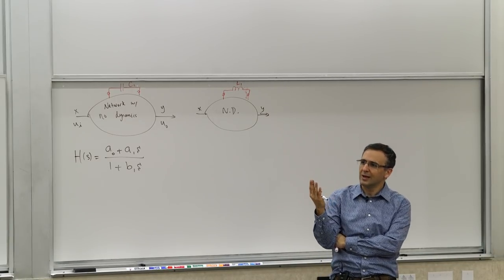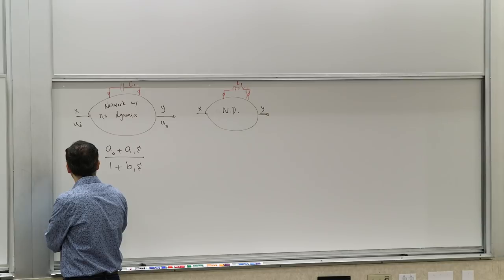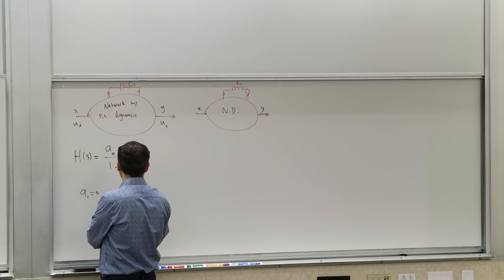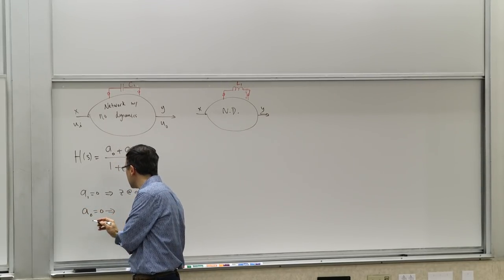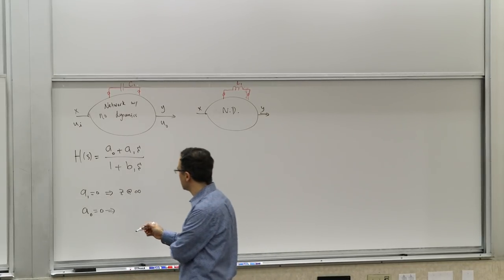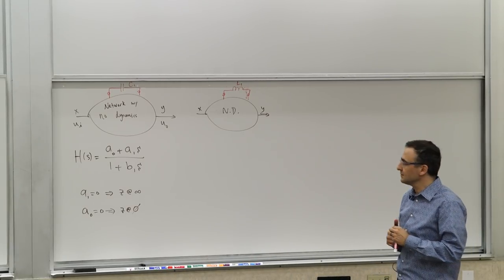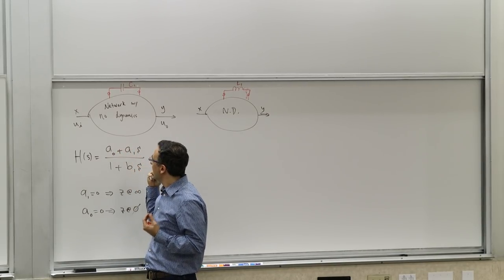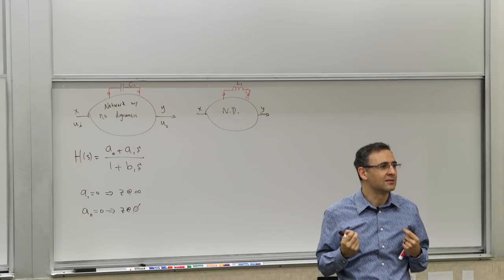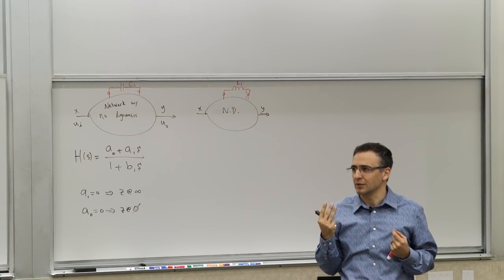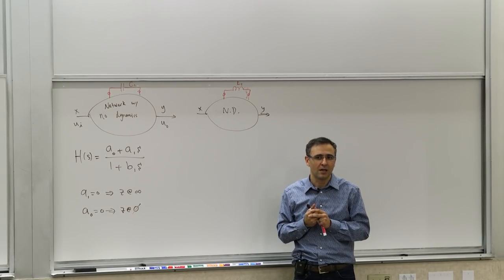This is the most general it can be. You may say it has no zero — well, when it has no zero, the zero is at infinity. If A1 is zero, the zero is at infinity. If A0 is zero, the zero is at zero. You can define anything in between. From this expression, there are three unknowns — A0, A1, and B1 — that if you knew, you would know everything there is to know about this first order LTI network.